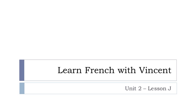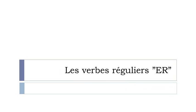Bonjour à tous, hi everyone and welcome to Learn French with Vincent. This is Unité de leçon J. So let's see what we'll discover in this lesson — we'll work on the way to conjugate les verbes réguliers, the regular verbs of the first group, and they end with ER. So let's start now.